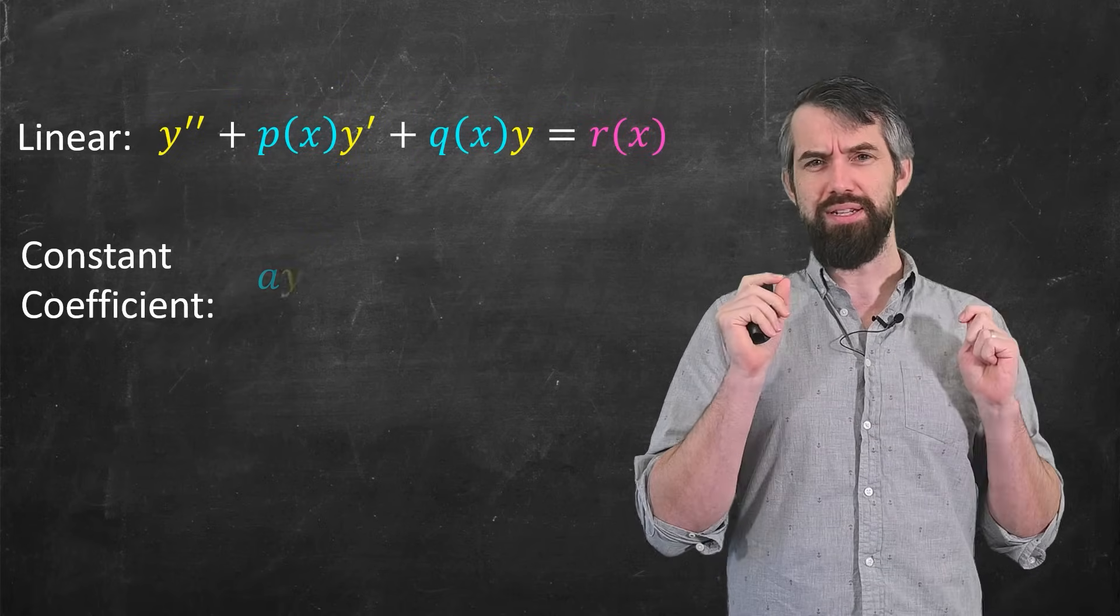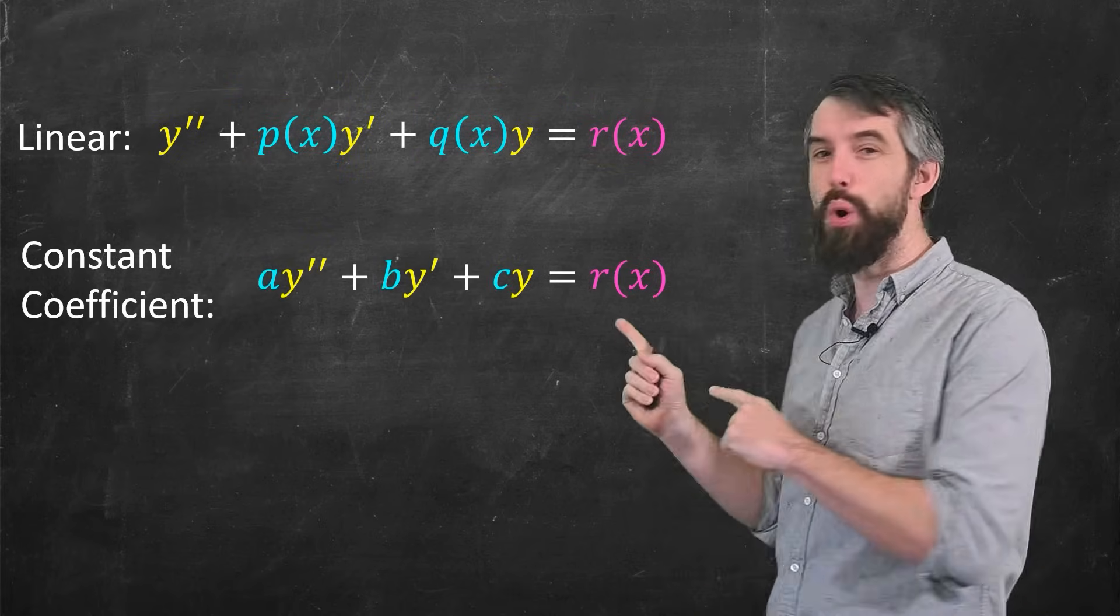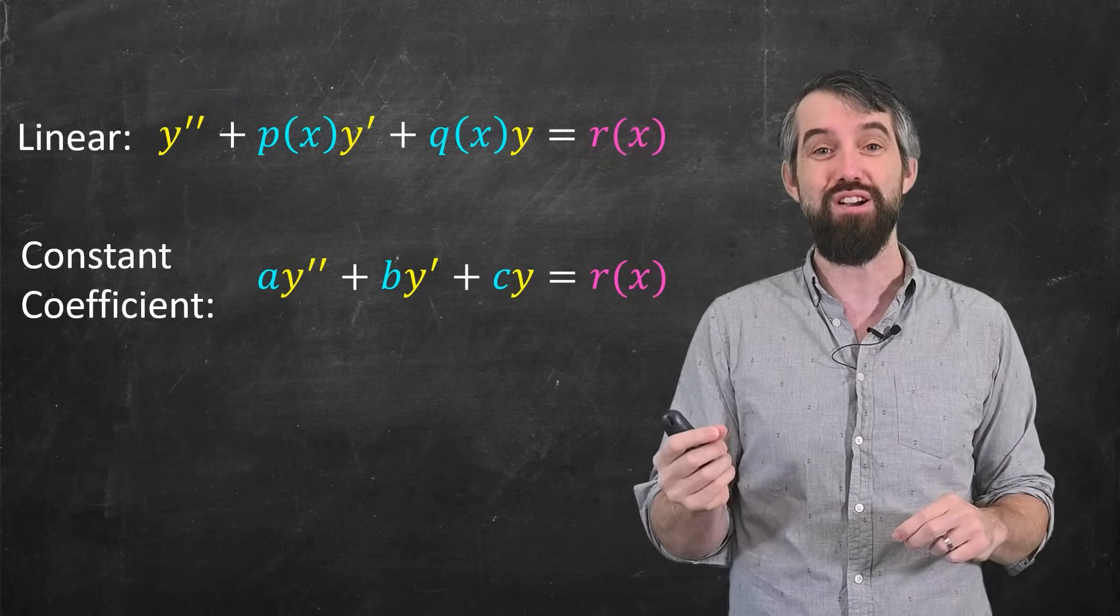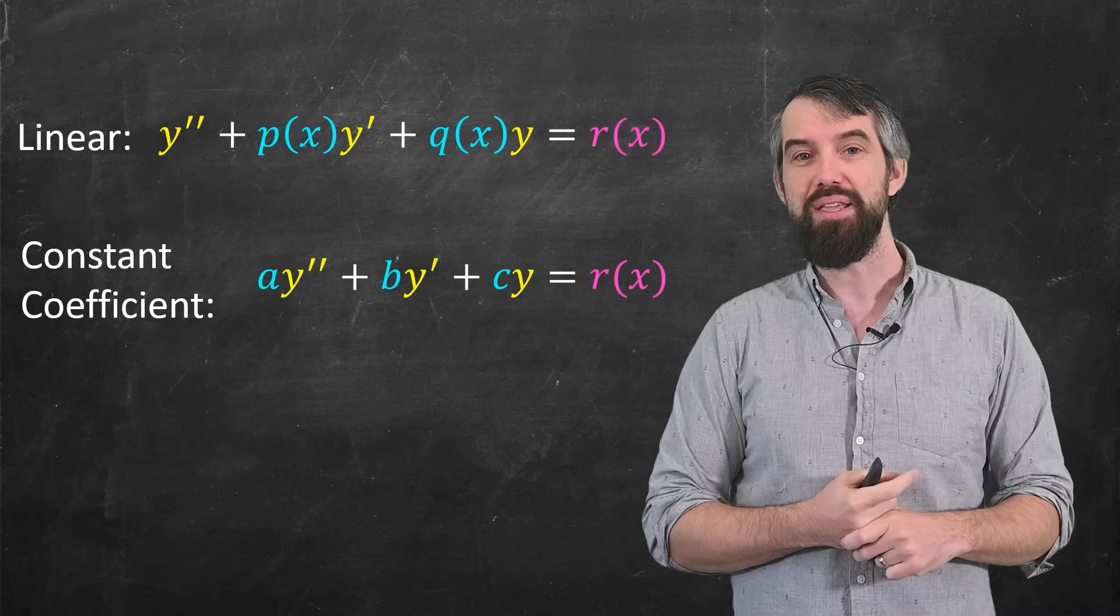There's also an important special case of linear equations called constant coefficients. That's when those coefficient functions actually are just constants like numbers a, b, and c.